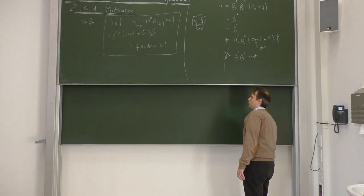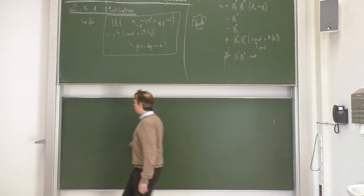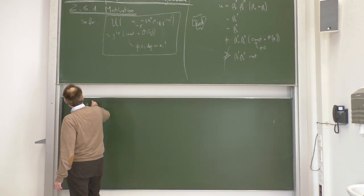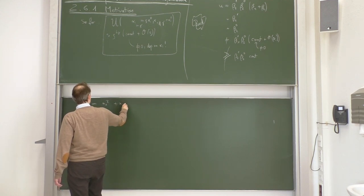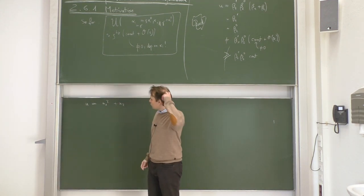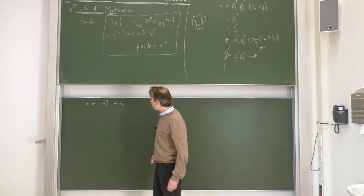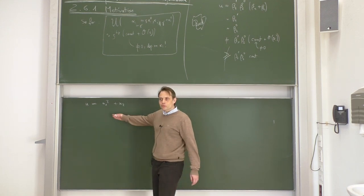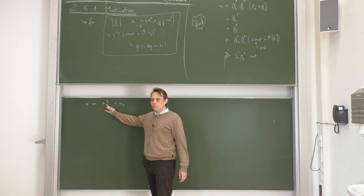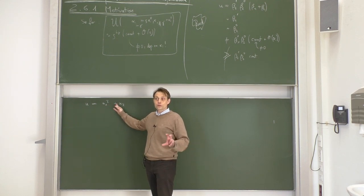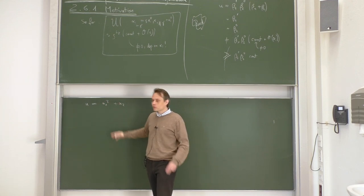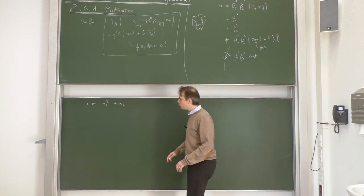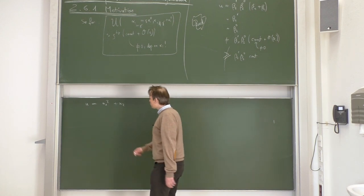Let us do another example: u = α₁² + α₂. This looks like a Symanzik polynomial, but not quite — it cannot be a Symanzik polynomial because the Symanzik polynomial is always homogeneous in all the alphas; each term has the same total powers of alpha. So this cannot be a Symanzik polynomial, but it is a function of the alphas.